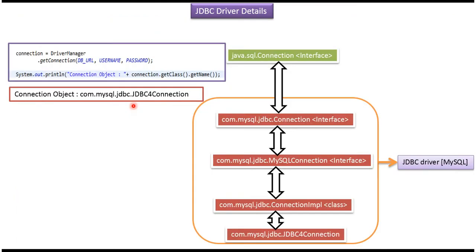If we use the MySQL-specific JDBC driver, then the DriverManager.getConnection() method will return the MySQL-specific JDBC connection object. Basically the connection object belongs to the JDBC4Connection class. This class, JDBC4Connection, belongs to the com.mysql.jdbc package.